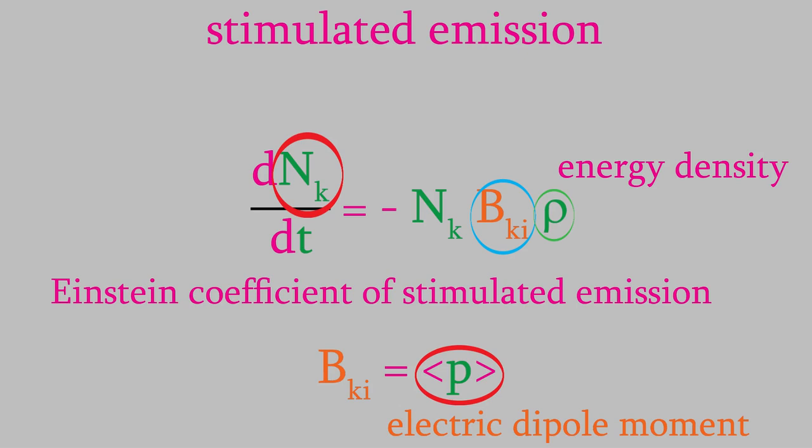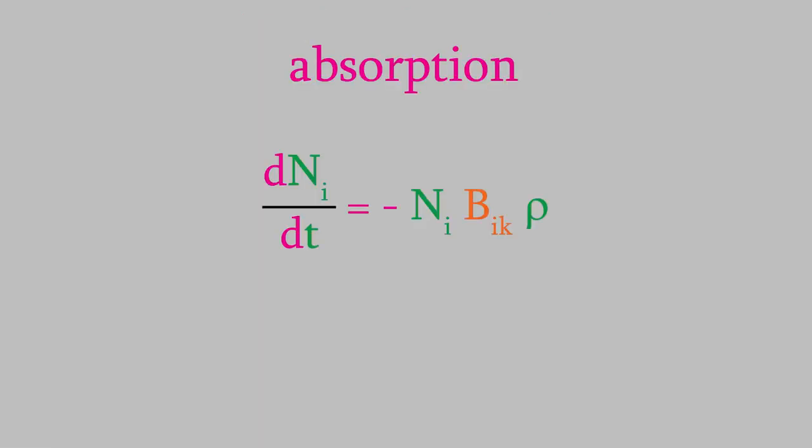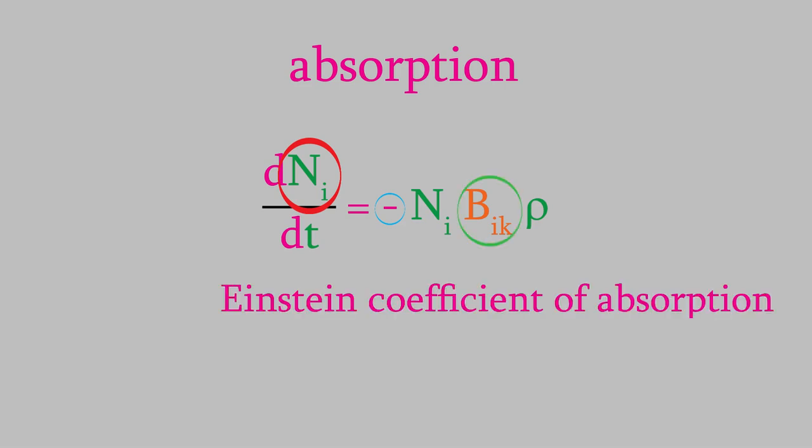The final equation is for absorption, which is this. This time, electrons are moving from a lower energy level I to an upper level K, so our reactants are the electrons in level I. So that's what we take the rate with respect to. Once again, we have a negative sign because the population of the lower level decreases when absorption occurs. As you would probably guess, the constant BIK is called the Einstein coefficient of absorption.